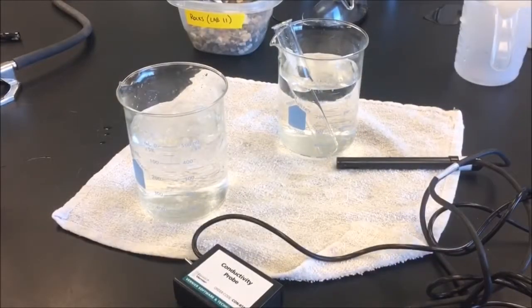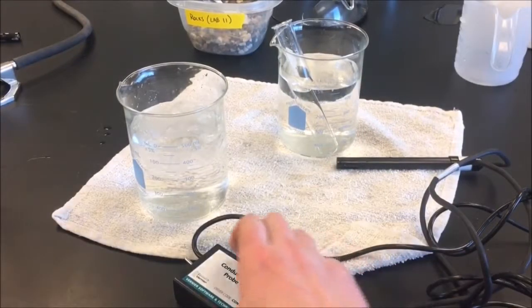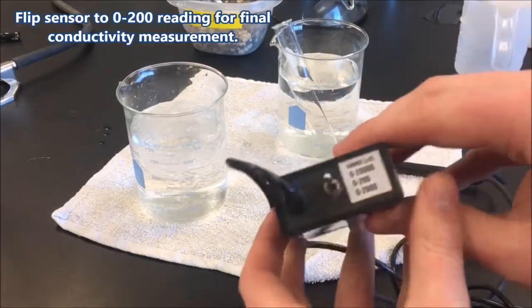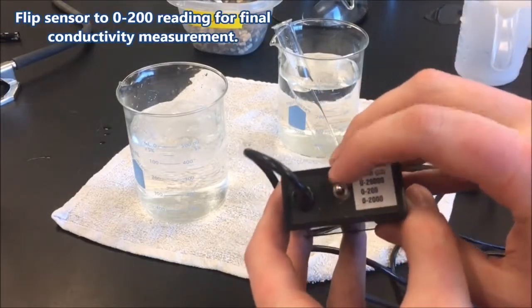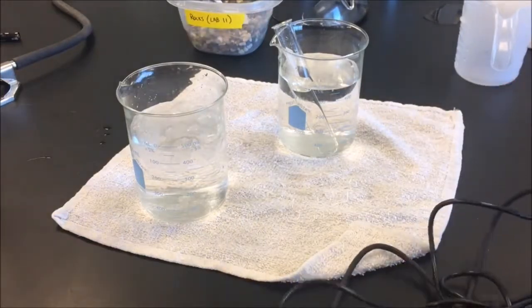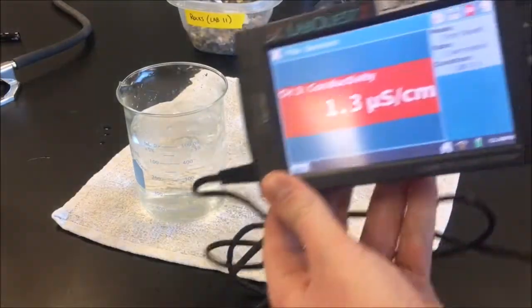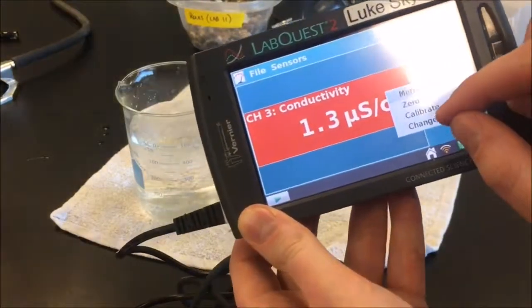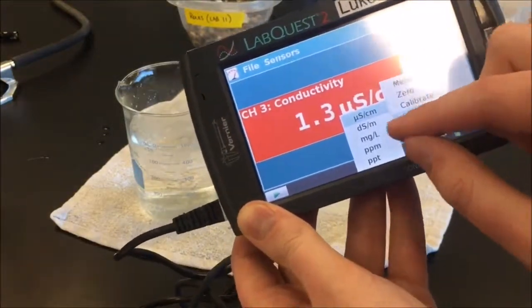So now we'll take our last conductivity measurement. Since we're expecting a much lower number, let's flip our sensor to the lowest setting, which is 0 to 200. Make sure that we're looking at milligrams per liter.